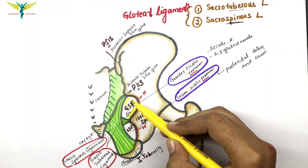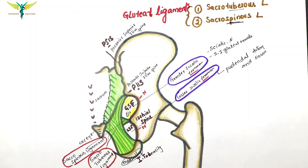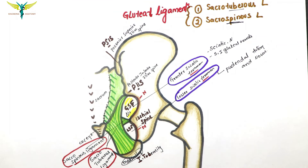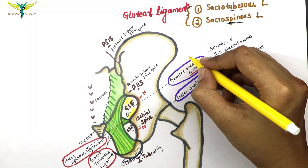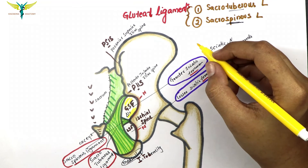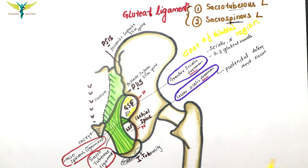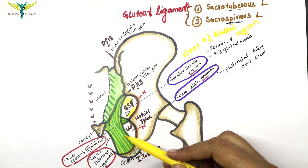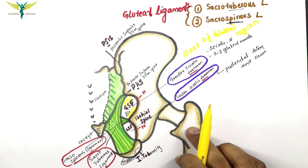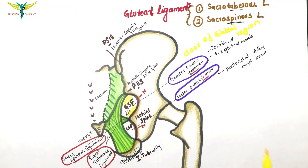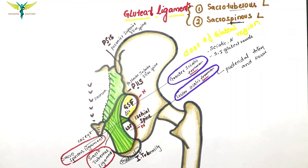Remember, the greater sciatic foramen is considered as the door of the gluteal region, through which all arteries and nerves enter the gluteal region from the pelvis — so this is called the door of the gluteal region. We will learn about the structures passing through the greater and lesser sciatic foramina in the upcoming video. That's all about the gluteal ligaments; if you like this video, please subscribe to my channel.